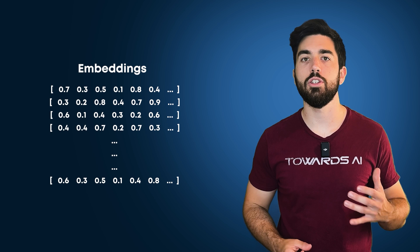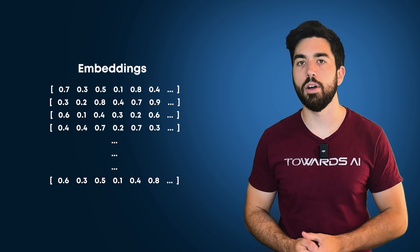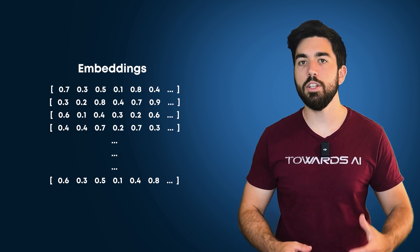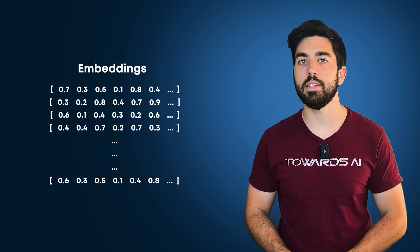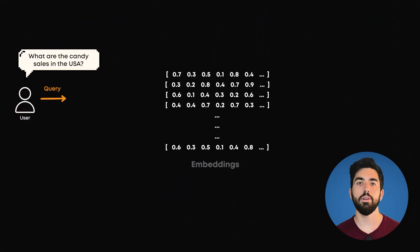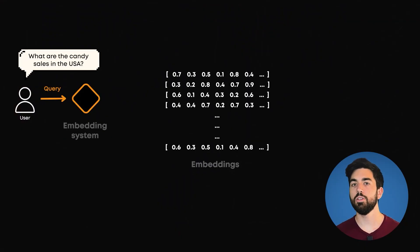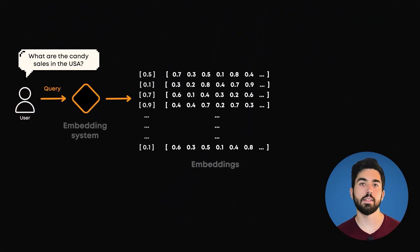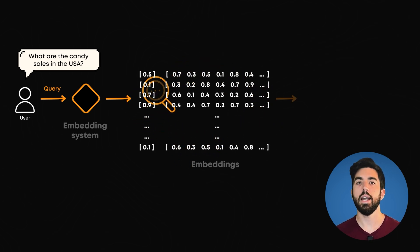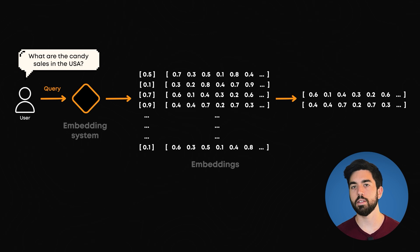These embeddings are just a huge list of numbers that are attached to the general meaning of each chunk of text from our database. Then, for each new query, we can feed it to our embedding system and use this new list of numbers to compare it manually to all our database embeddings or vectors and retrieve the most similar ones.